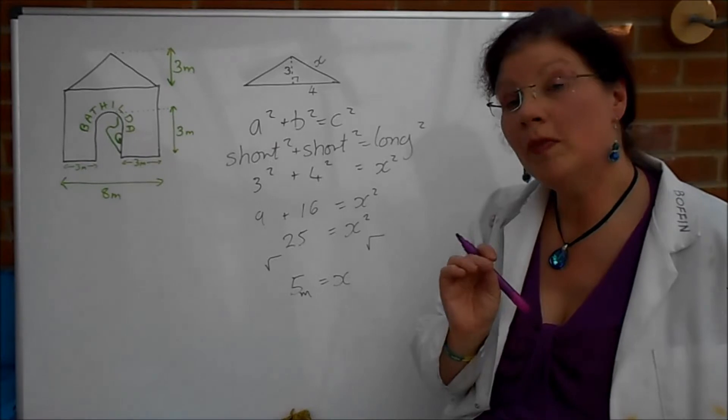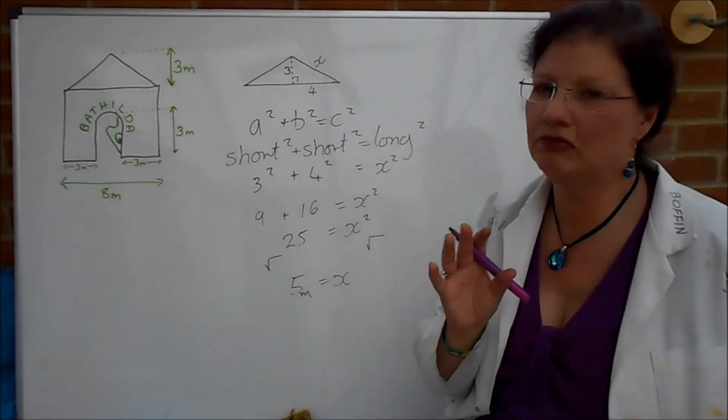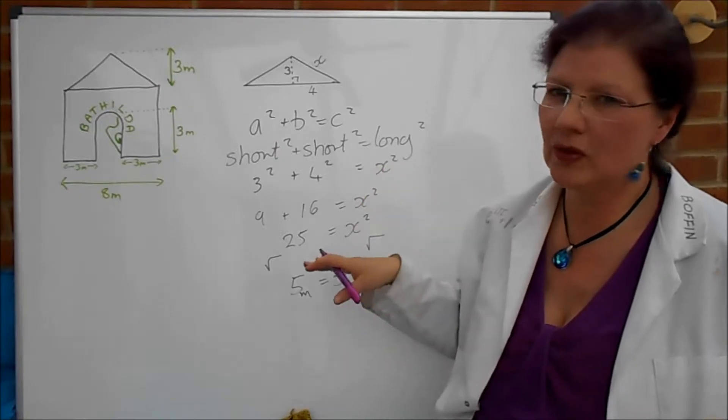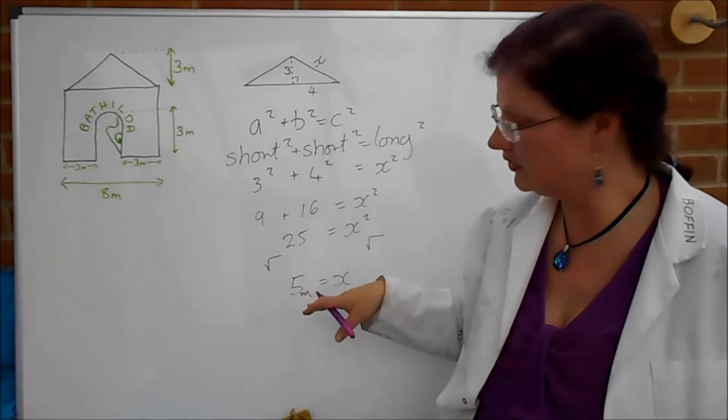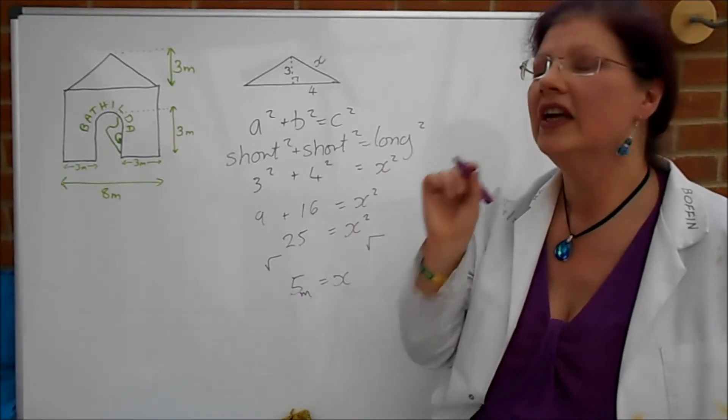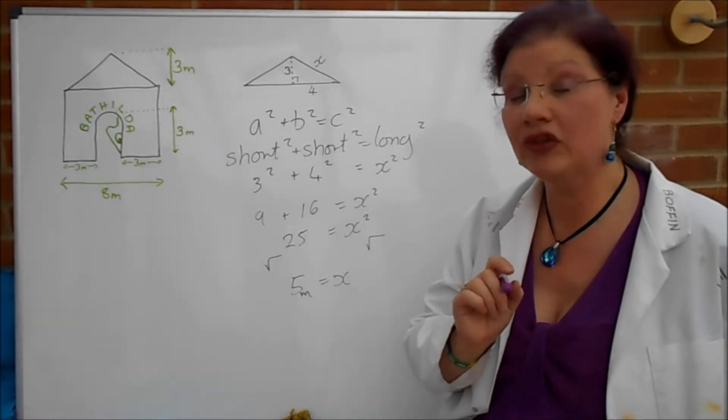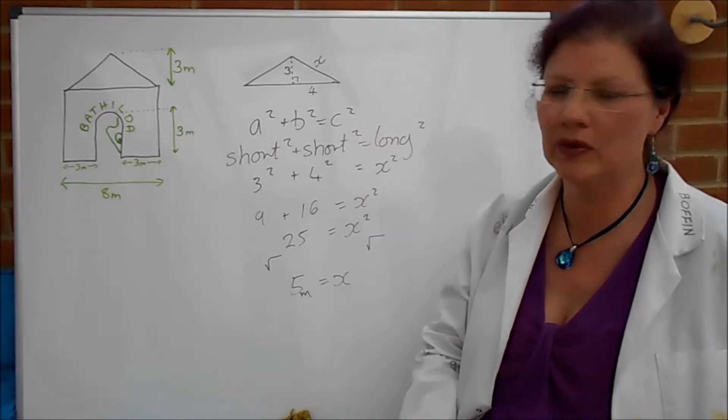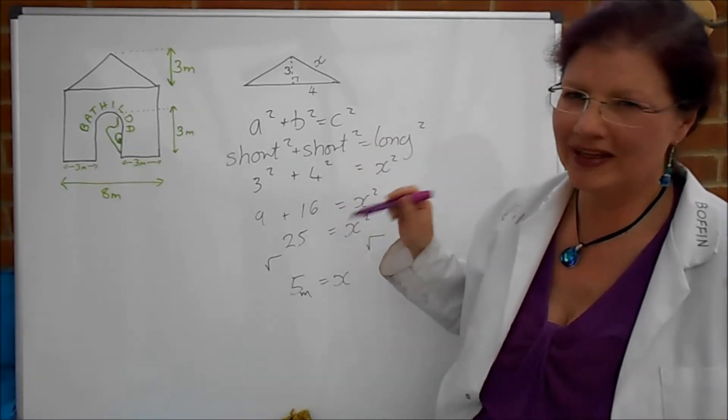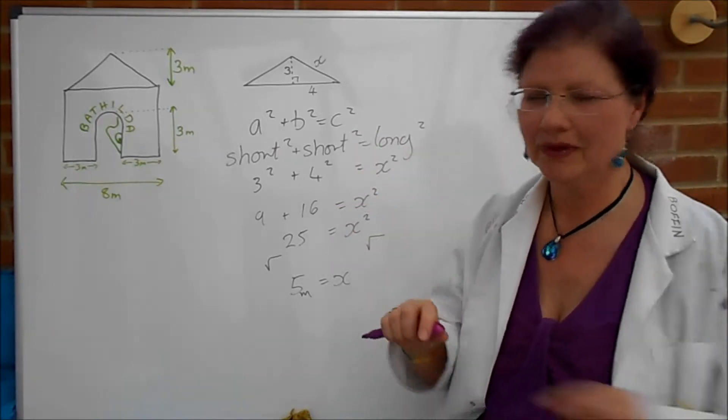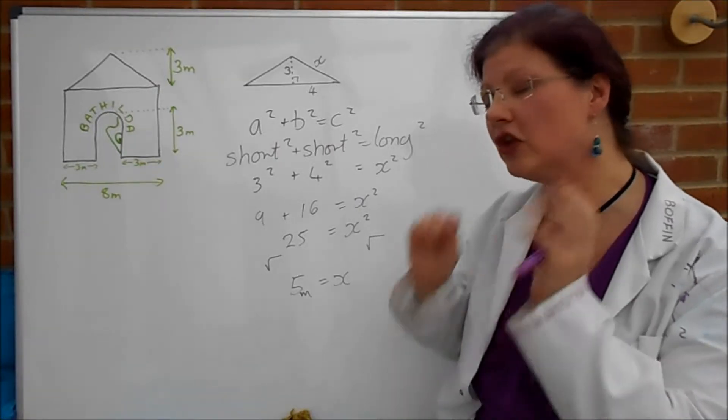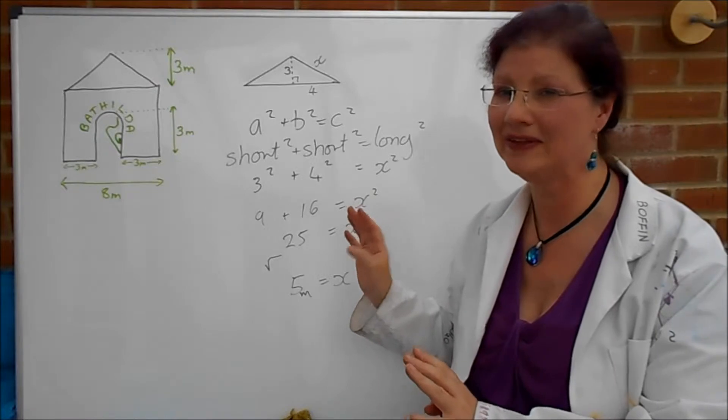It's possible that you may have recognized this as a standard right-angled triangle the three four five one because most of the time when you work out these square roots they don't come out to nice numbers. If you recognize it as a three four five triangle that is totally fine you can just put five. Although personally I'd show a bit of working just to make the examiner happy. Remember they might not have had a cup of tea and a chocky bicky very recently so be nice to your examiners.